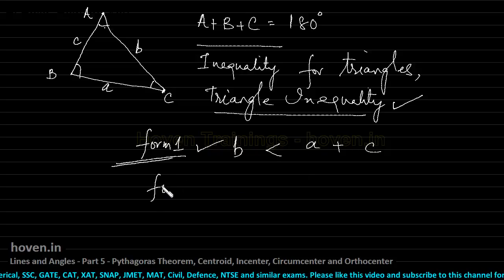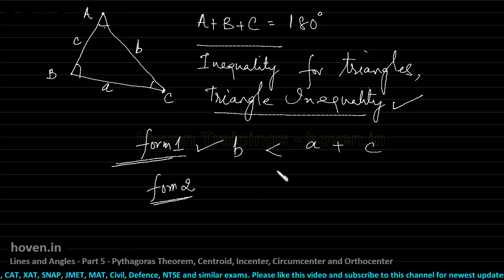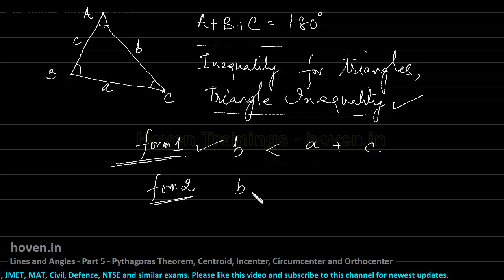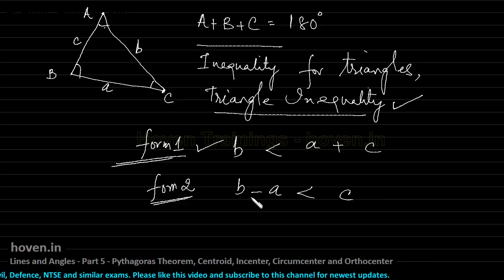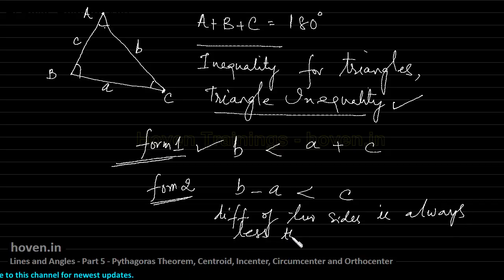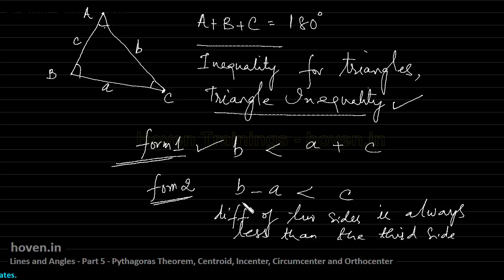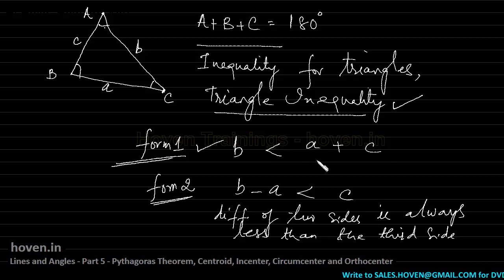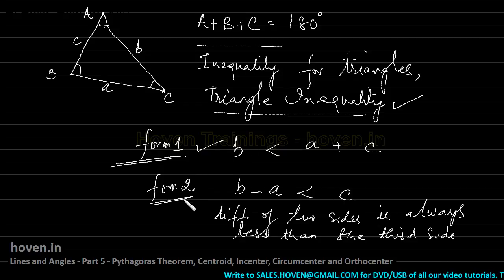Form 2 of the triangle inequality is also there. If we transpose a side, it says that the difference of two sides is always less than the third side. So: sum of two sides is more than the third side, and the difference of two sides is always less than the third side. You should remember both these forms — they will come in handy many times.